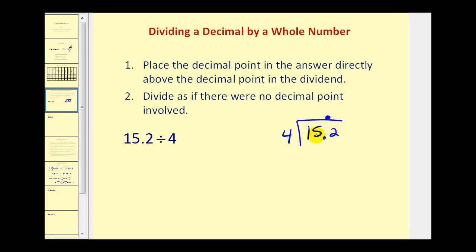So we ask how many fours are there in 15? That would be 3. 3 times 4 is 12, remember we subtract, bring down the next digit, which is a 2. How many fours in 32? That would be 8. 8 times 4 is 32, and we have a remainder of 0. So our quotient is equal to 3.8.